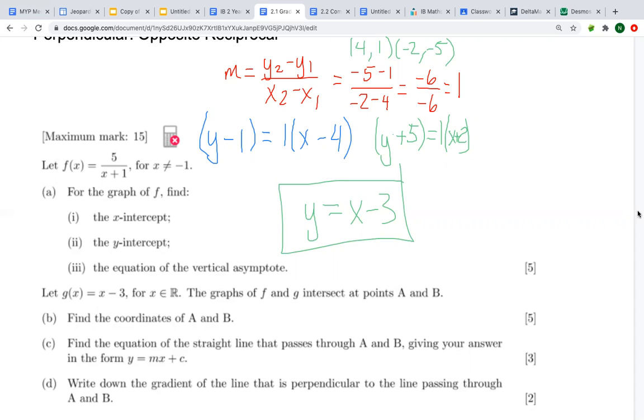Okay, so now based off of this, it says write down the gradient of the line that is perpendicular to the line passing through A and B. So gradient, again, is slope. Our original slope was negative six over negative six. If I were to change that to be the opposite reciprocal, I would flip the fraction and change the sign. So then I would have positive six divided by positive six, which is positive one.